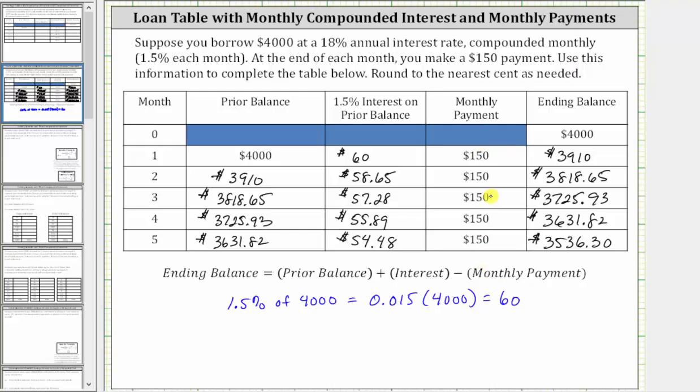Notice during these five months, less than $100 is used to reduce the balance of the account and more than $50 is used just to pay off the interest. I hope you found this helpful.